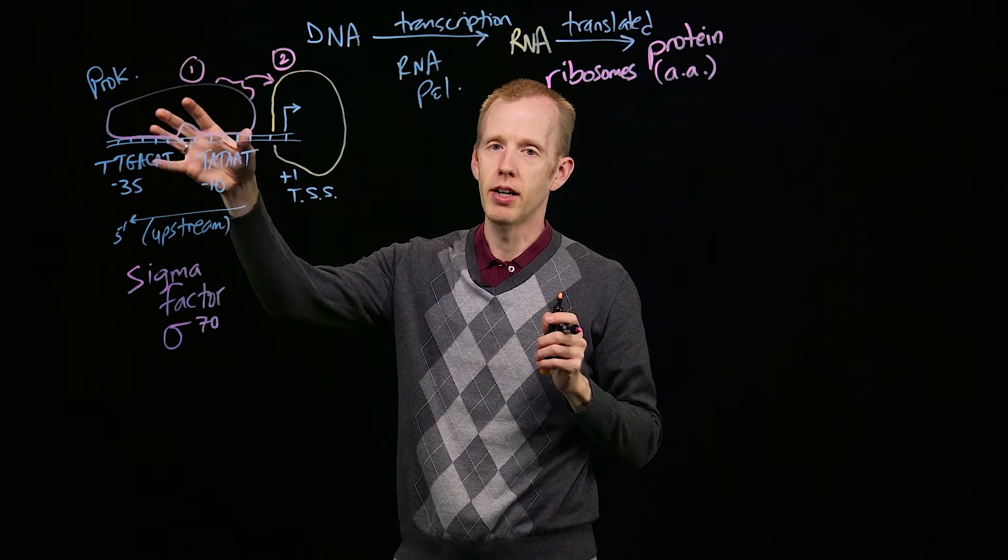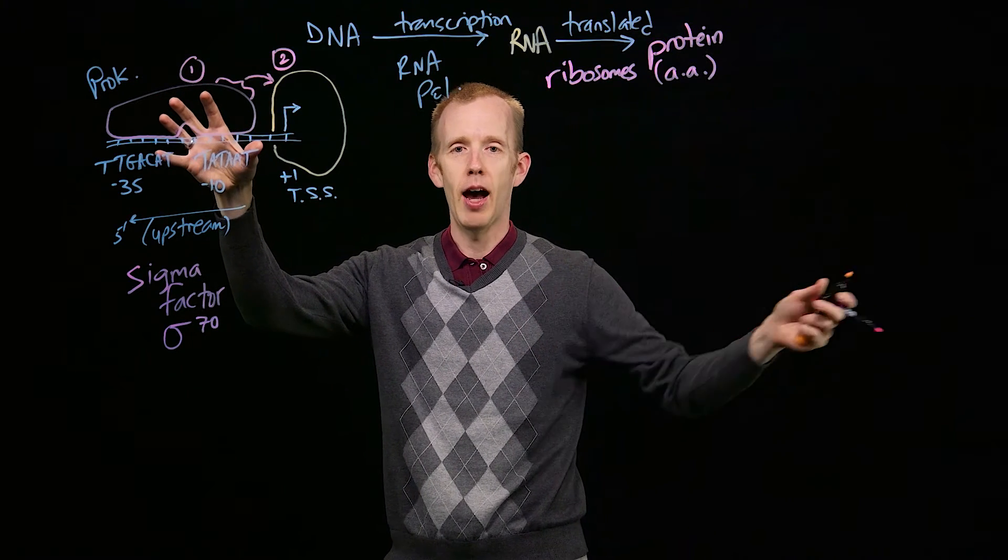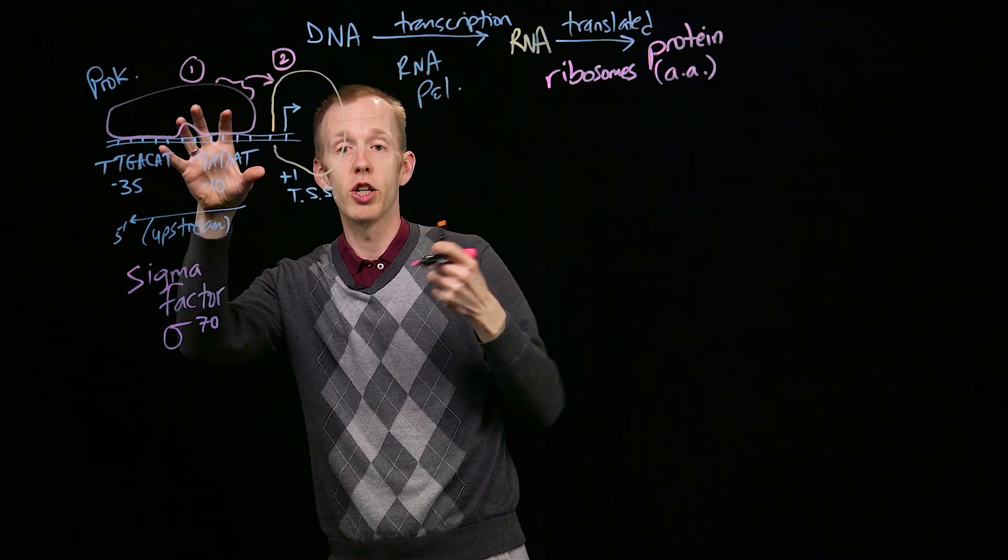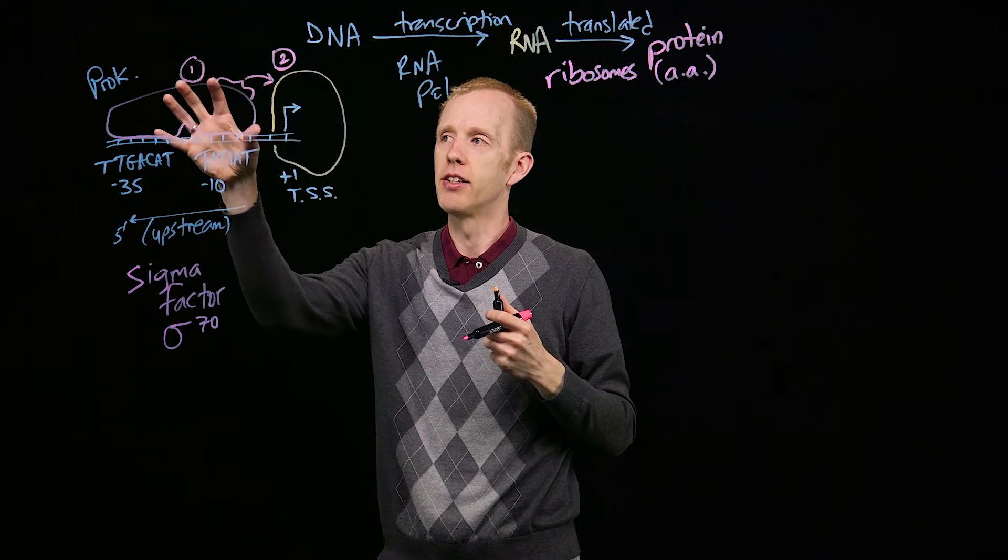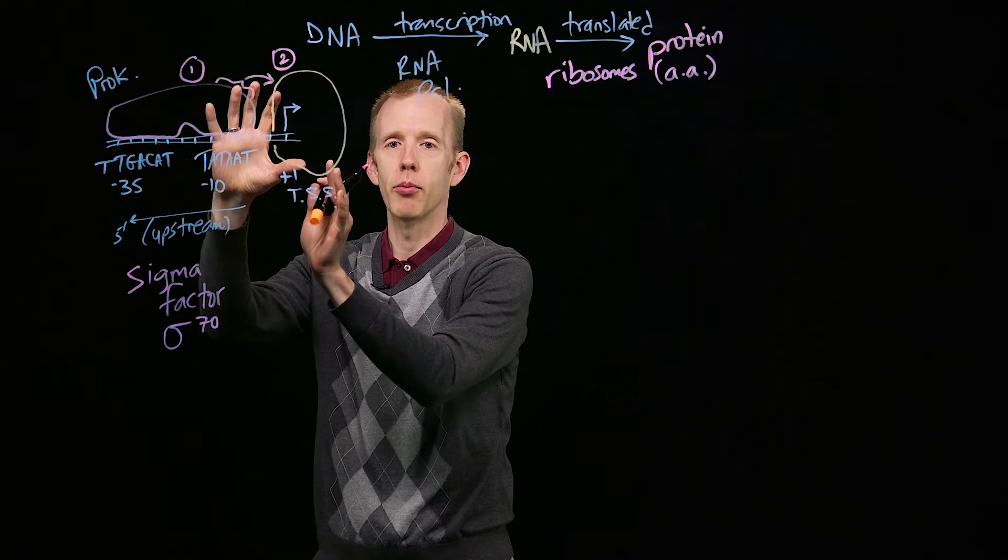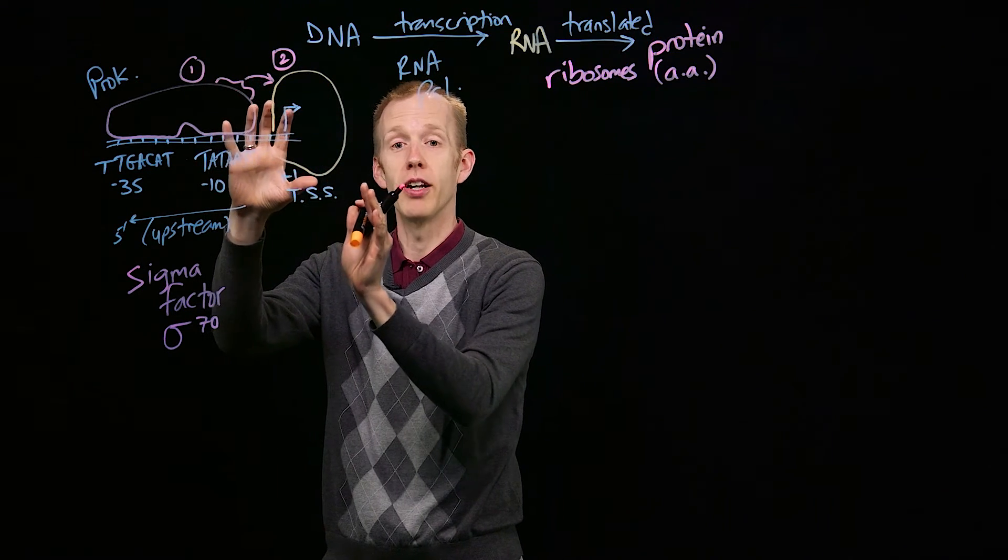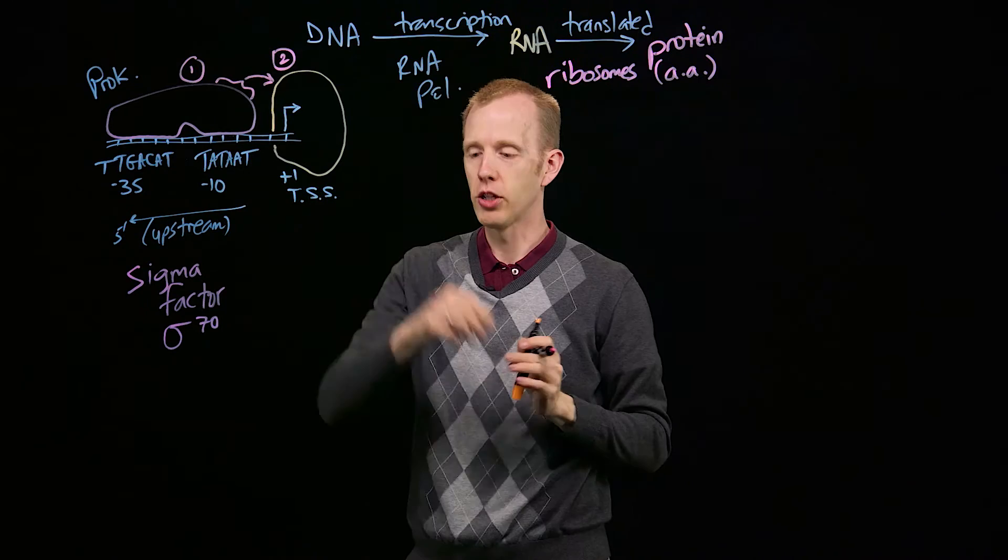The second thing that happens is that sigma factor pulls in or recruits RNA polymerase. And sigma factor holds RNA polymerase right there, where it's supposed to start transcribing a gene.